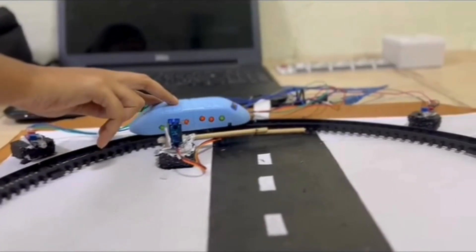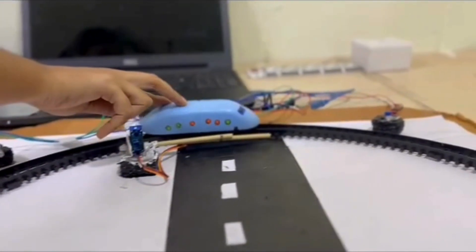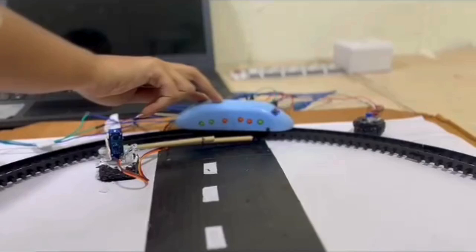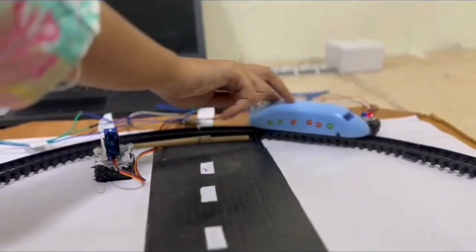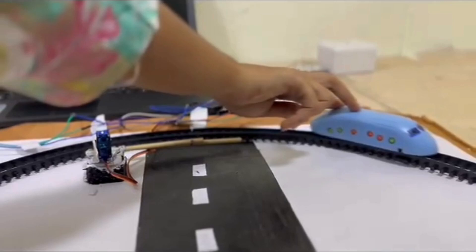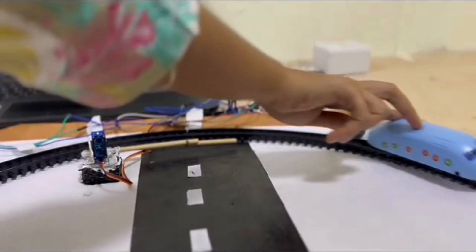Automatic railway gate systems use various sensors and mechanisms to detect approaching trains and trigger the opening and closing of the gates accordingly. Here's a simplified explanation of how they work.